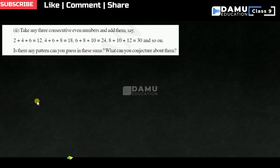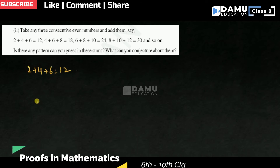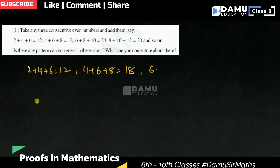Next question: take any 3 consecutive even numbers and add them. They are given that 2+4+6=12. Then 4+6+8 — these are consecutive even numbers which we are going to add. Then 6+8+10 = 24. They have given many problems like that. Is there any pattern? Yes, there is one pattern.